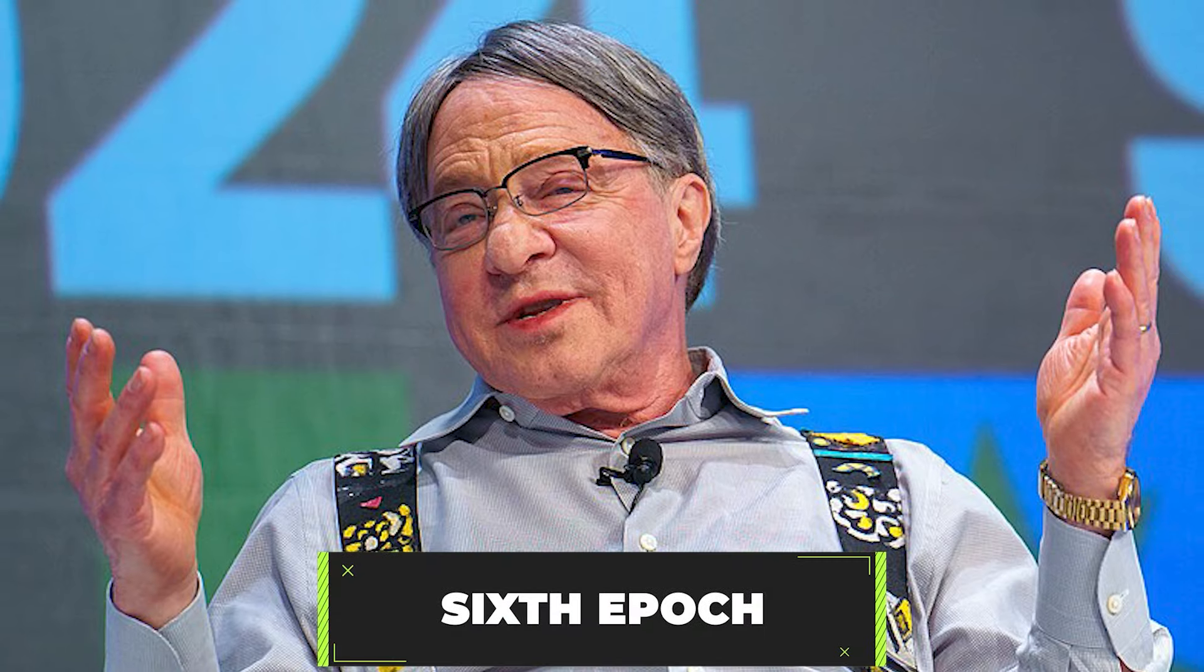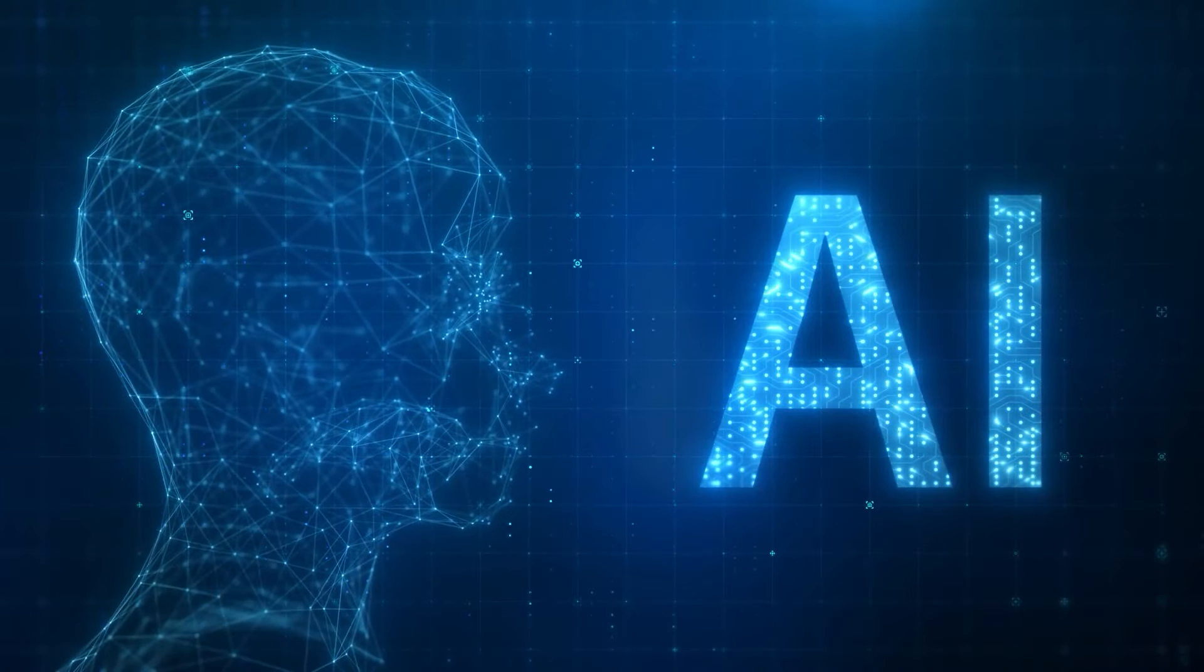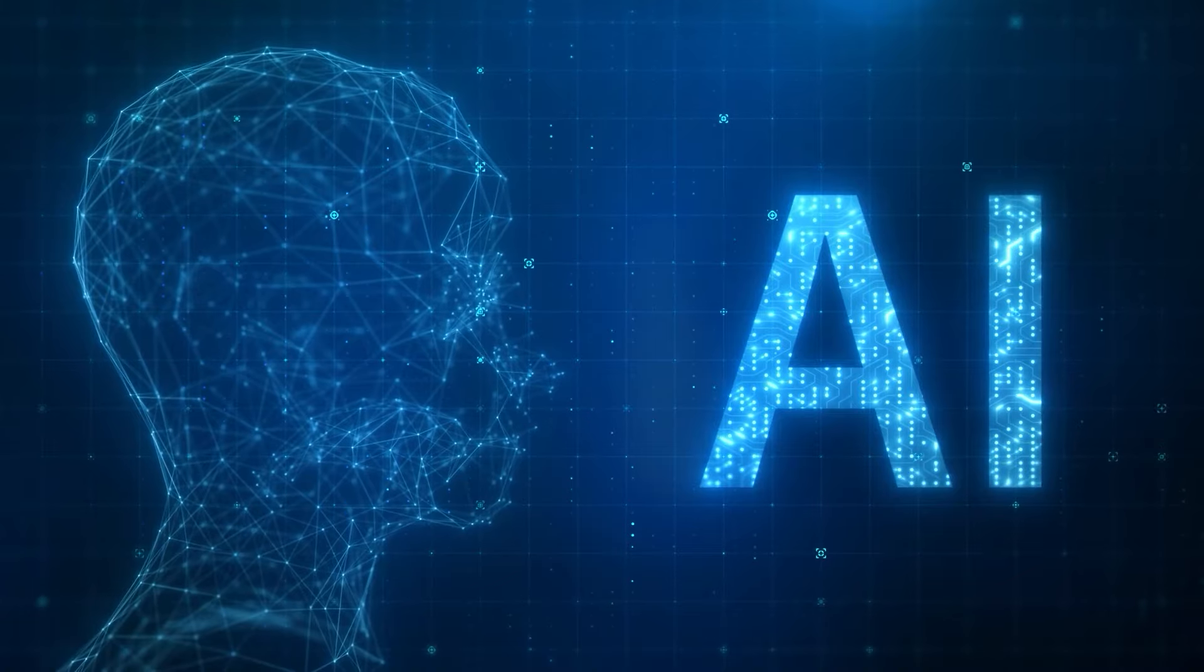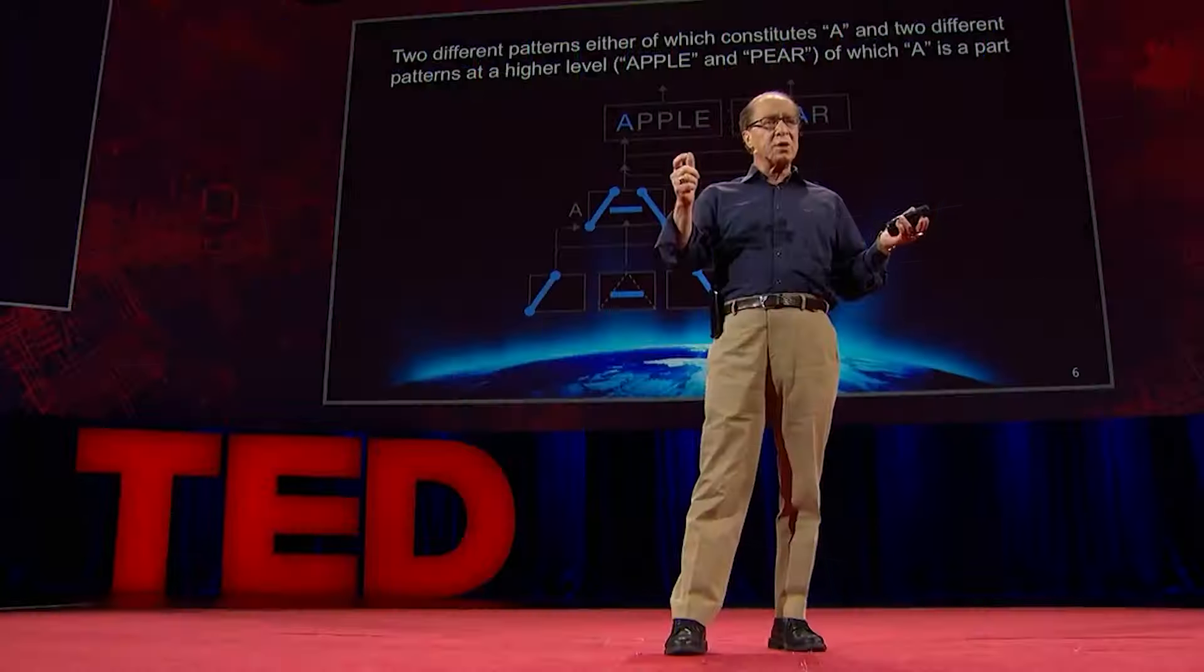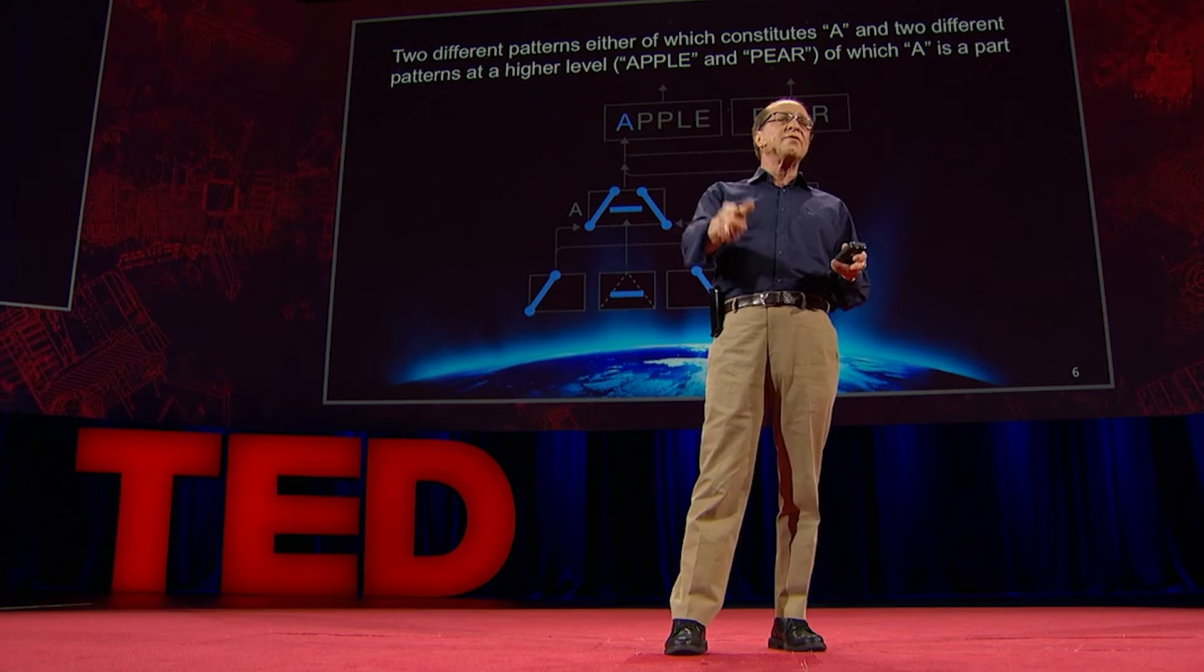Kurzweil posits that these epochs lead us toward the sixth epoch, the singularity, where artificial intelligence surpasses human intelligence. The law of accelerating returns.